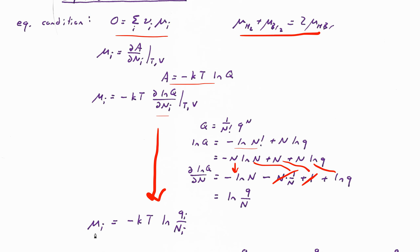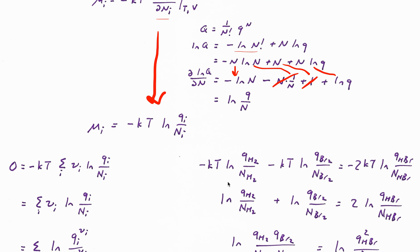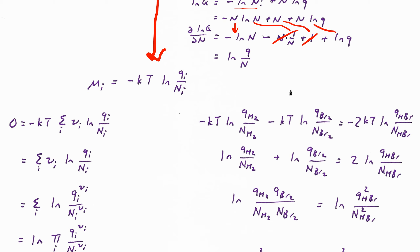The net result is that the chemical potential of any individual species is −kT log of the partition function of one molecule of that species divided by how many molecules of that species we have. That's the expression we can plug into the equilibrium condition — either the general one, or for the specific H2 and Br2 case.